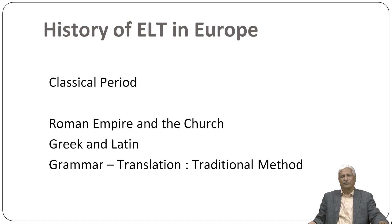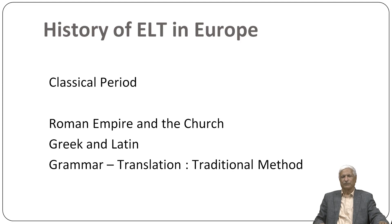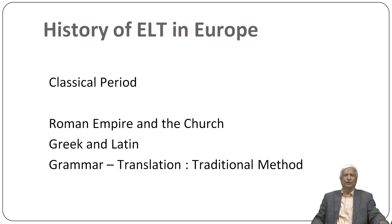Along with the Roman Empire, an equally important influence was, of course, the Catholic Church. The Catholic Church in Christianity was the predominant religious institution in Europe during the classical period. All academic activities were also governed largely by religious institutions. So not only universities and training colleges, but even schools were largely influenced by the Church during the classical period. The Roman Empire was, of course, very powerful — one of the most powerful political empires in the world.